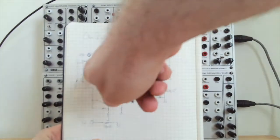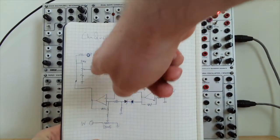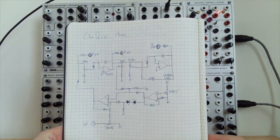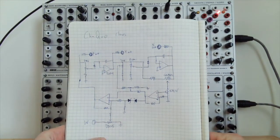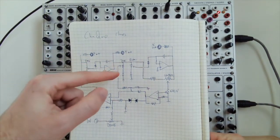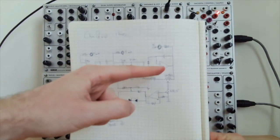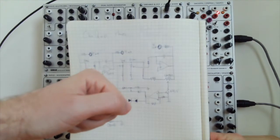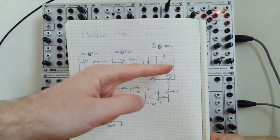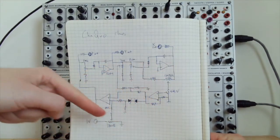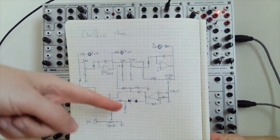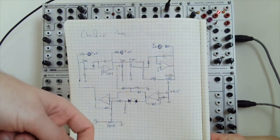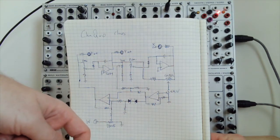There's an input, there's an integrator here, which is a low-pass filter. That goes to a second integrator, so a second low-pass filter. And then there's a feedback circuit, and it goes through a non-linearity down here through these diodes.